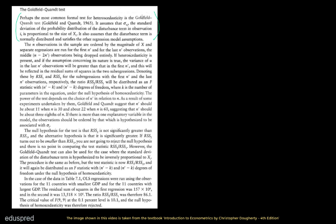In the first paragraph, they have written the assumptions underlying the disturbance term. The first assumption is that the test assumes the standard deviation of the disturbance term is proportional to the size of Xi, which is your independent variable. The second assumption is that the disturbance term is normally distributed and satisfies the other regression model assumptions. The population error should have a normal distribution and also satisfy the other assumptions.